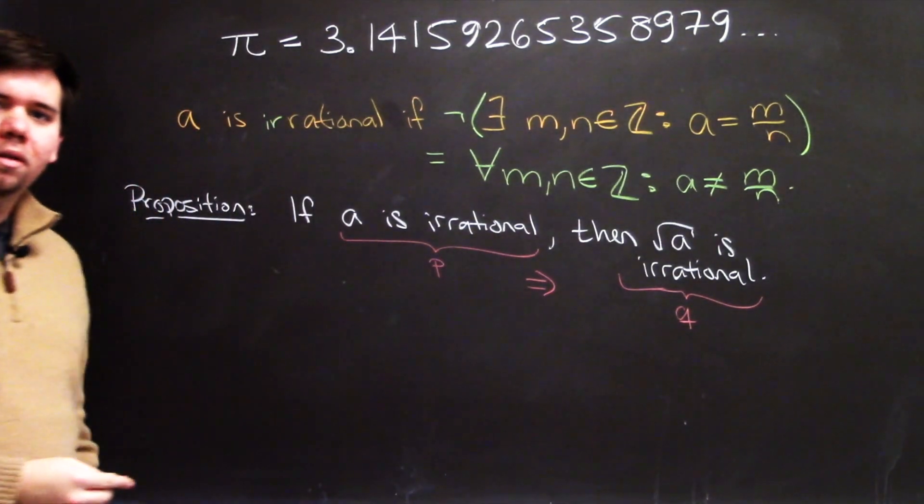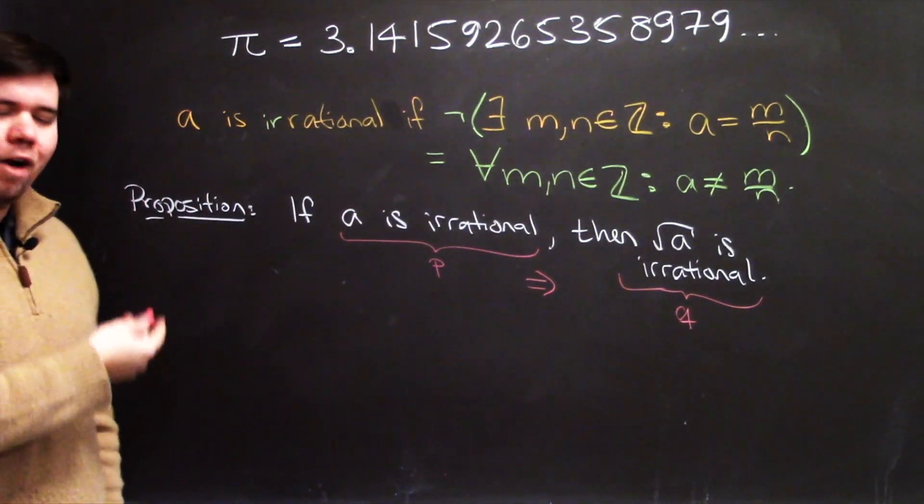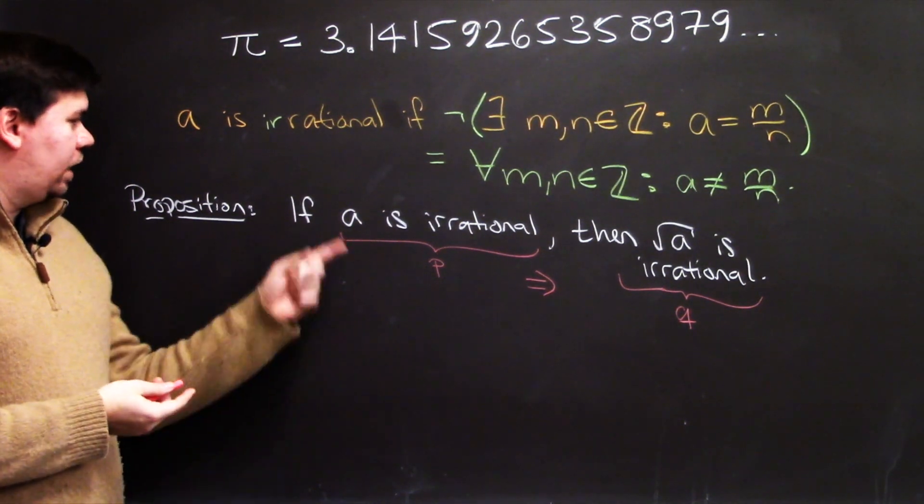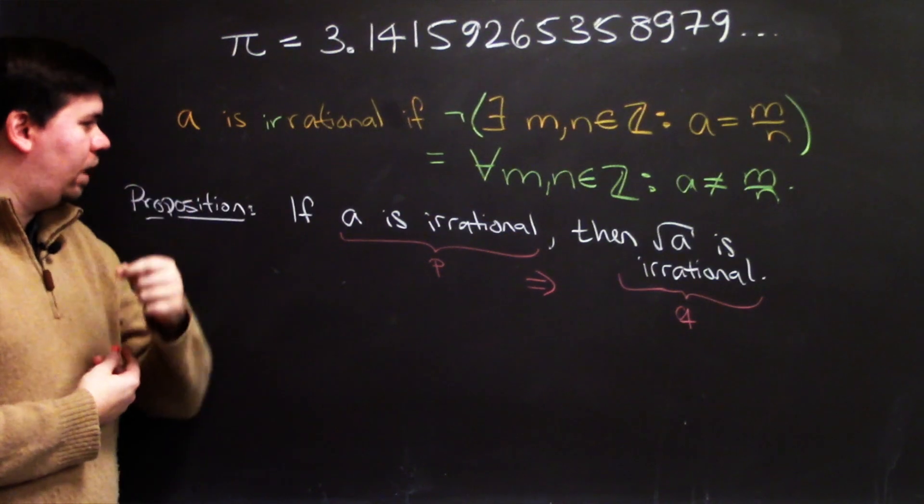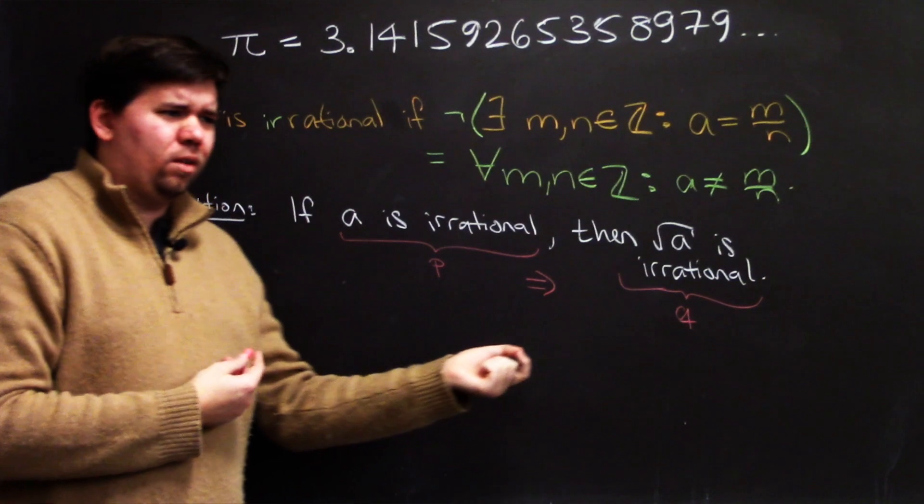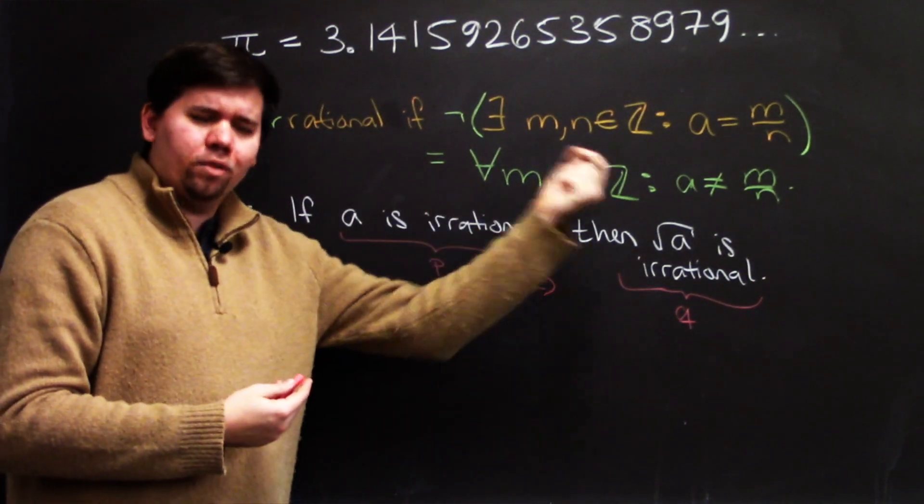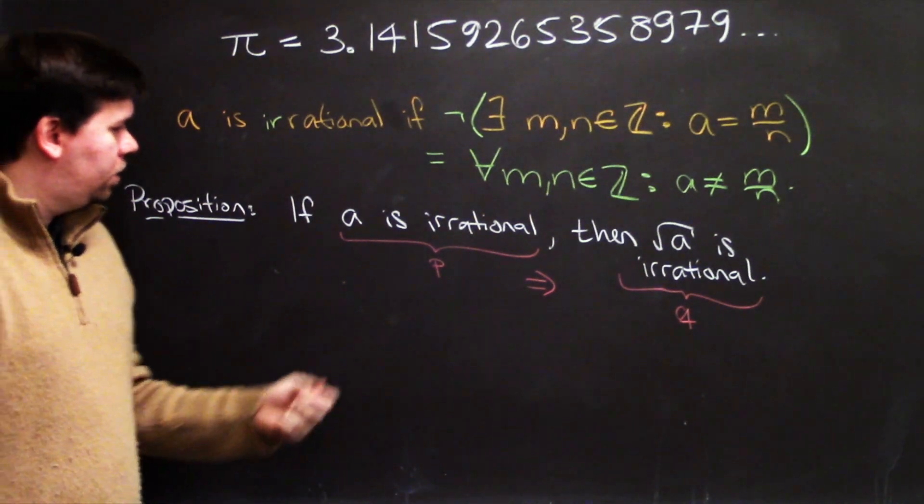the square root of a is irrational. Now just looking at this, I don't have a good instinct of how I would prove this. You know, it's like a is irrational, I can't write it as a fraction, it goes on forever. Okay, but how do I know then the square root of that thing is also irrational? You know, you take the square root of a number that goes on forever, it should go on forever, it's not exactly clear how you do this. But,